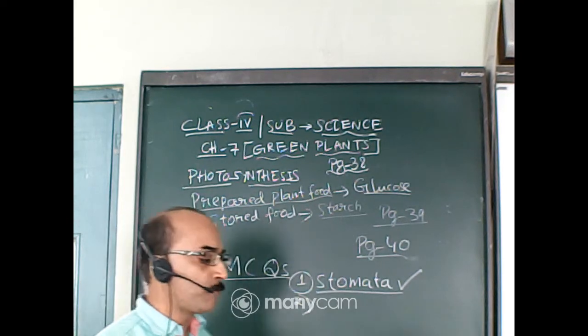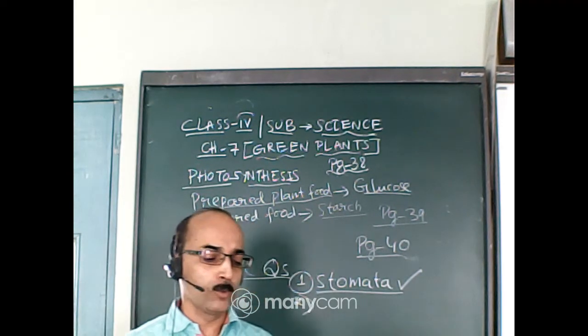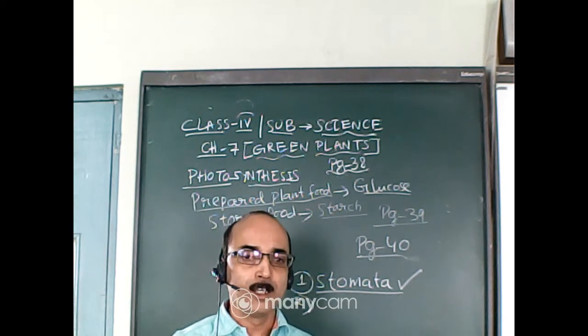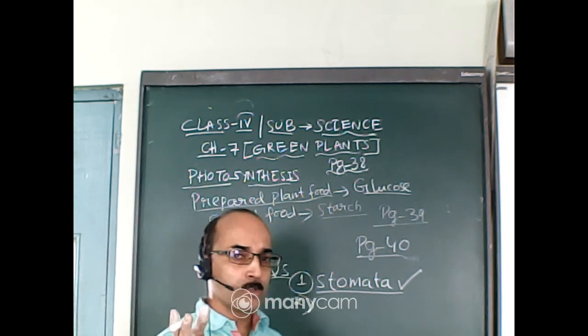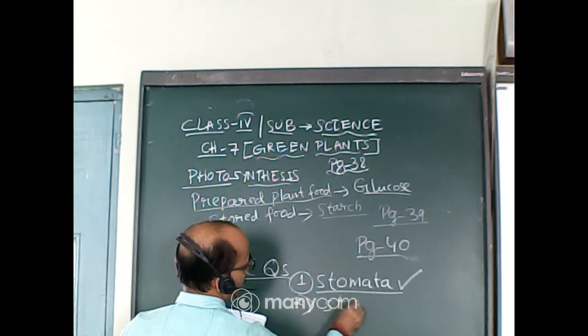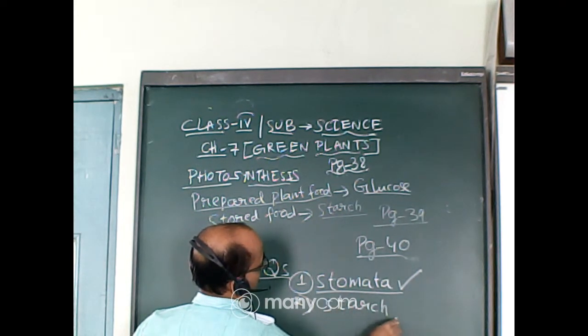Number two: plants store extra food in the form of... glucose, starch, cooked food, or beans. What is the answer? Stored food is starch.